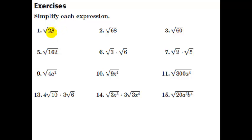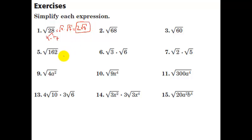Let's simplify each expression. The square root of 28: factor into perfect squares — 28 is 4 times 7. So we write this as the square root of 4 multiplied by the square root of 7. The square root of 4 is 2, and the square root of 7 is not a perfect square, so we get 2 root 7. For 162, it can be written as 2 times 81. Since 81 is already a perfect square, we write this as square root of 81 times square root of 2, and since square root of 81 is 9, the answer is 9 root 2.